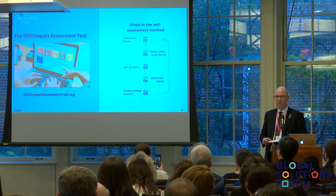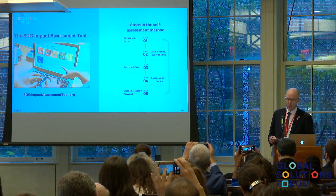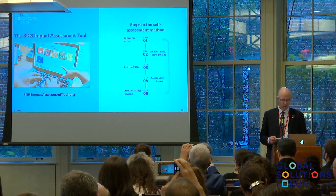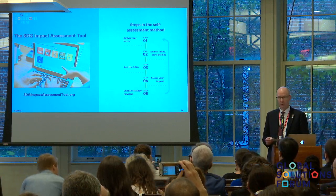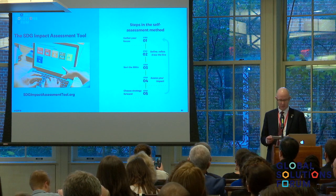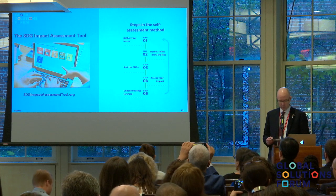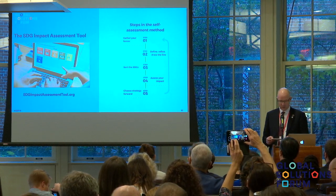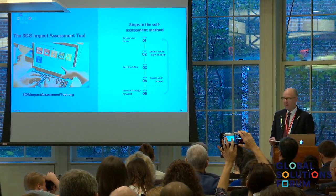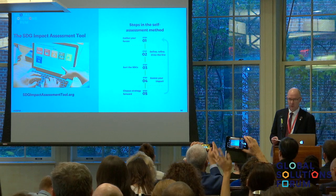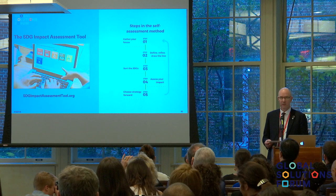The tool will help companies or other organizations to do self-assessments of the impacts they have on SDGs. The methodology we recommend contains five steps. Ideally, first, you gather your forces and perform an assessment in a workshop format. Then you define, refine, and frame the solution that you assess. You sort the SDGs to get the discussion started in the group. Then you do the actual SDG impact assessment, and given the results of that, you formulate the strategy forward.